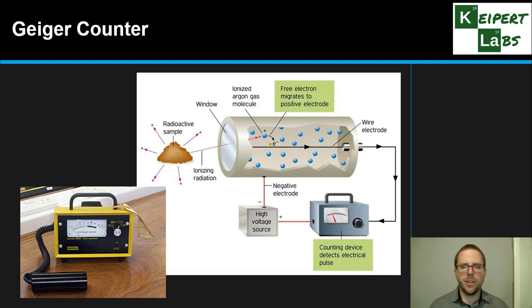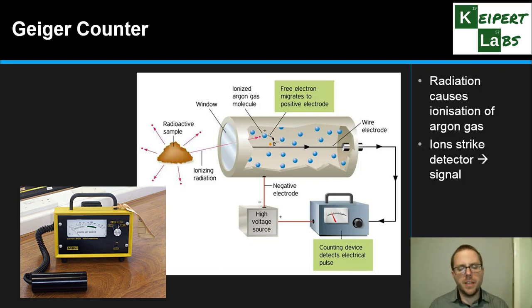It's connected up to a device that counts it, so it records that interaction but it also gives a very characteristic click. It gives an auditory signal as well as actually counting it in terms of how many interactions there have been. So it's that classic kind of click-click-click sound in movies. The ionization of argon gas causes the electrical signal which is then amplified and recorded. So the more clicks you hear, the more radiation is being detected. You can also look at the rate of counts as a way to measure radioactivity.